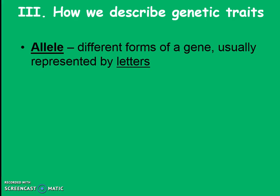Now we'll move into genetic traits in more detail, and this is one of our hardest words of the day — it is the word allele. Try saying it: allele. This is different forms of a gene, usually represented by letters. For instance, for plants we just talked about how plants can be tall or short — those are two different versions of the height trait, different forms of a gene.